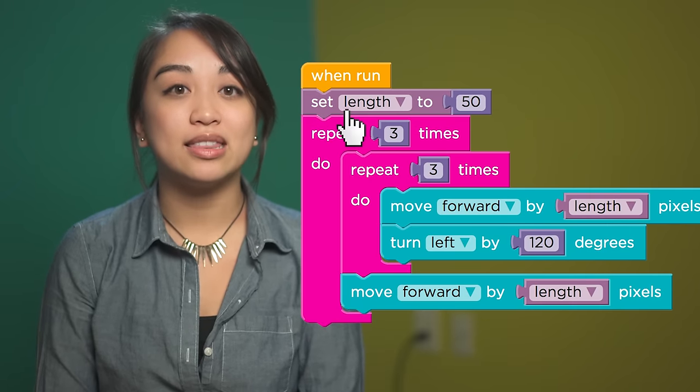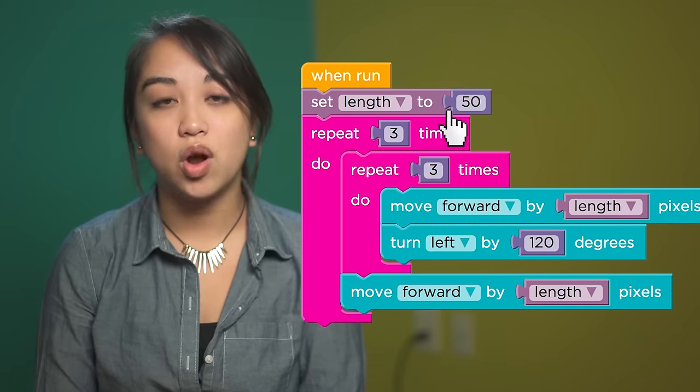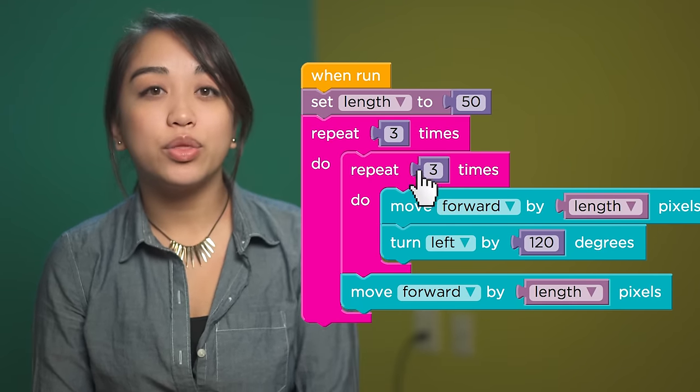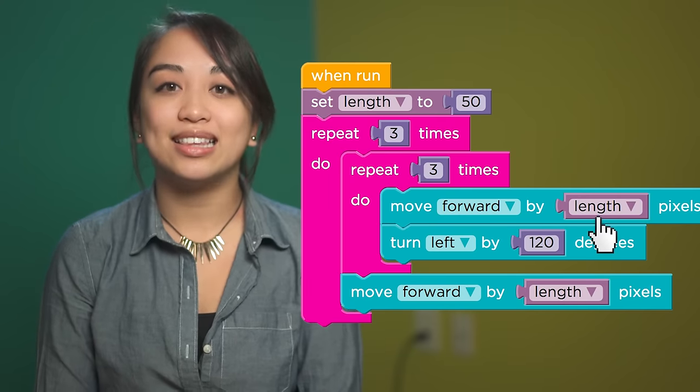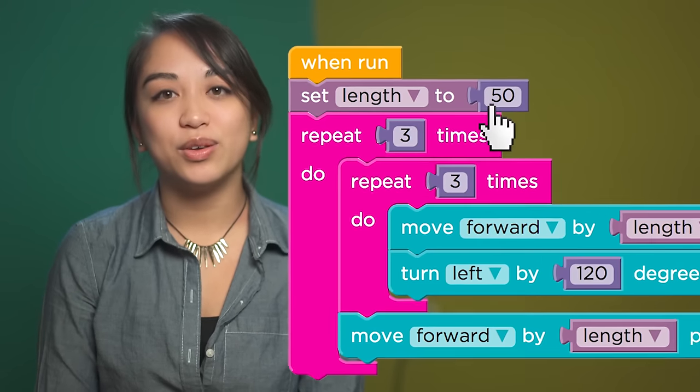In this puzzle, we're going to be using a variable that will set the length of the line our artist draws. Later on in our code, the move forward block will look at that length variable to see what value you've set it to.